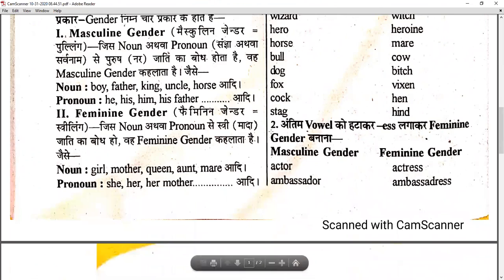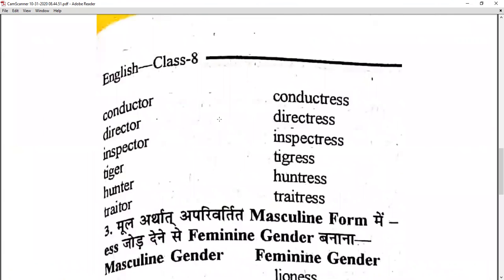Rule 2 — remove the last vowel and add -ess: for example, actor — remove the last vowel 'o' and add -ess — becomes actress. Ambassador becomes ambassadress, conductor becomes conductress, director becomes directress. Similarly: inspectress, tigeress, huntress, and treatress. You remove the last vowel and add -ess to form the feminine.